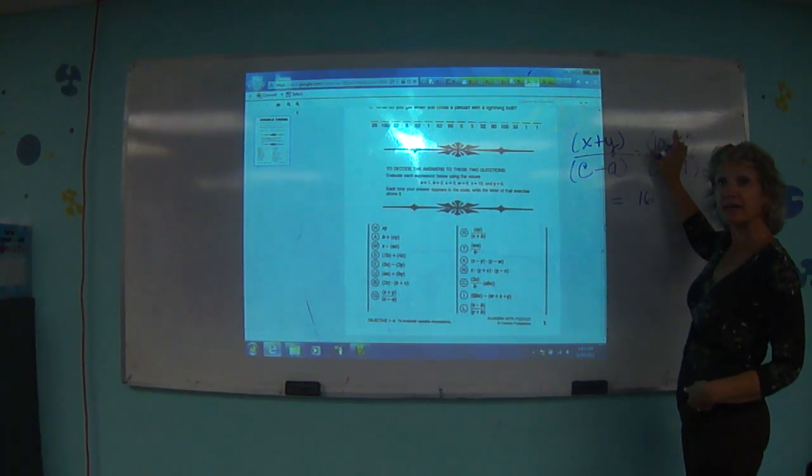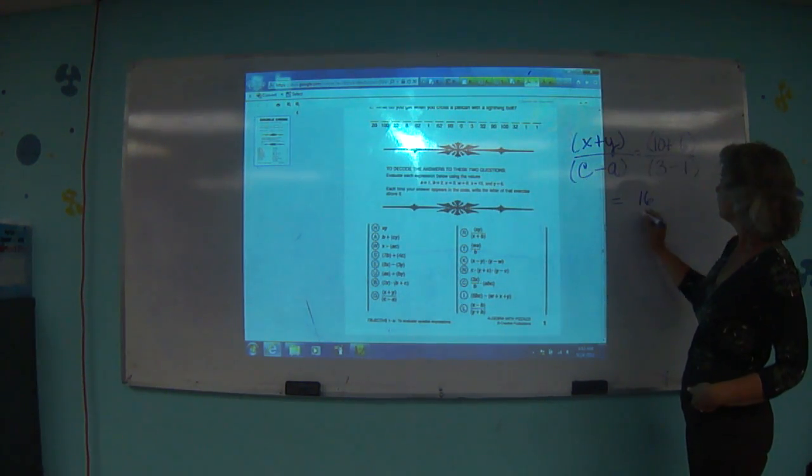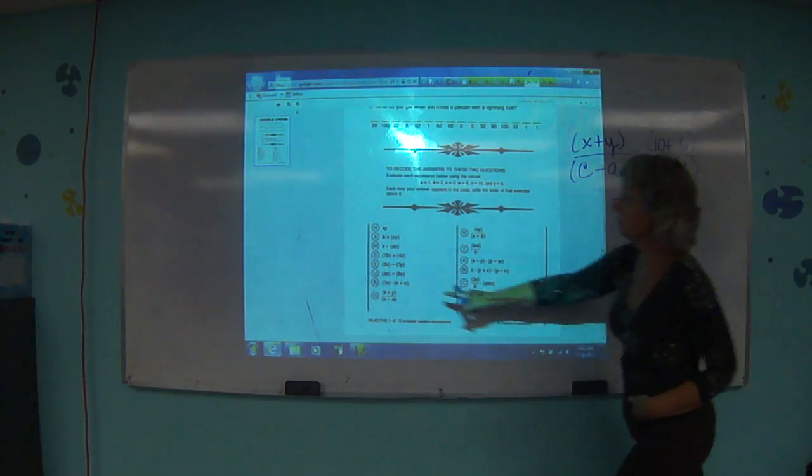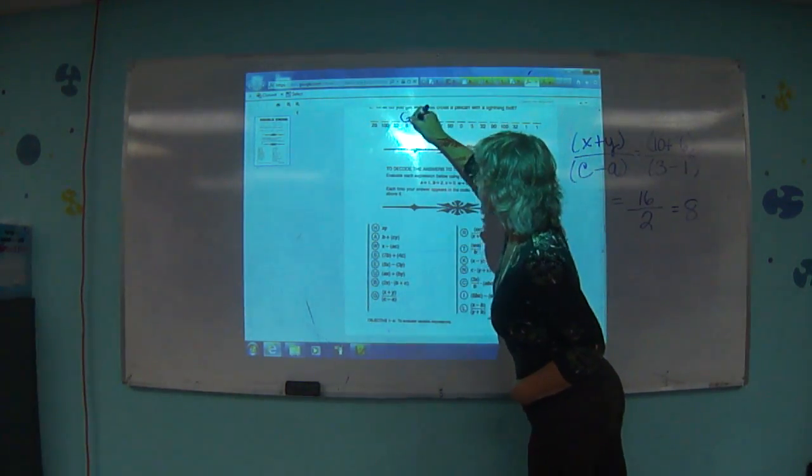Solve the grouping symbol called the numerator. 3 minus 1? 2. Solve the grouping symbol called the denominator. How many 2s in 16? 8. So find the 8 and put the letter G in. That's how you solve it.